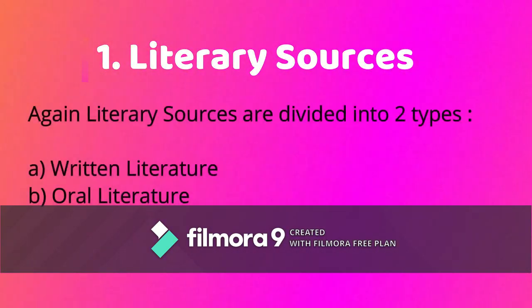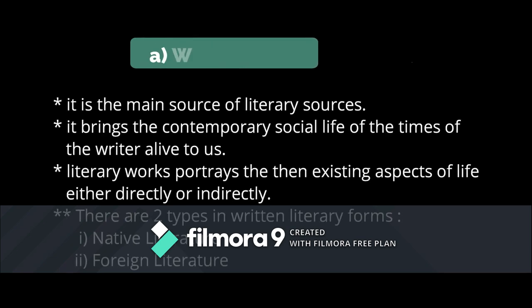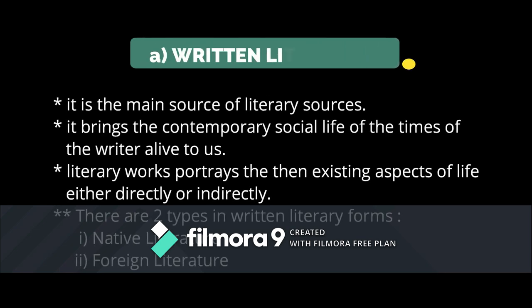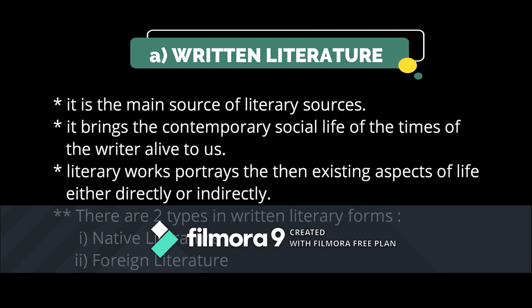Literary sources are again divided into two types. The first is written literature, which is the main type of literary source. It brings the contemporary social life of the writer's times alive to us. These literary works portray the then-existing aspects of life, either directly or indirectly.